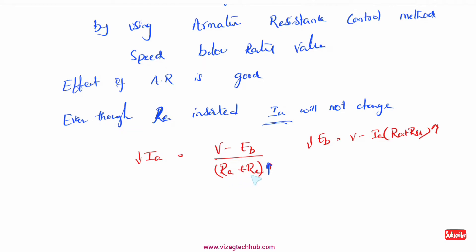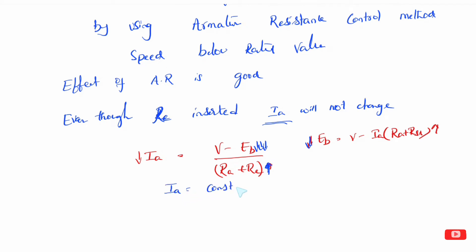If you see the external resistance pattern: Eb decreases, and Ia decreases as well, but the net effect — the change — means Ia remains approximately constant. So Ia is equal to constant.